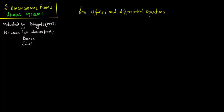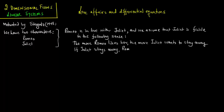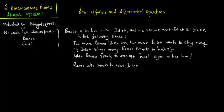One is Romeo and the other is Juliet. Romeo is in love with Juliet, and we assume that Juliet is fickle in the following sense: the more Romeo likes her, the more Juliet wants to stay away. If Juliet stays away, Romeo starts to back off. When Romeo starts to back off, Juliet begins to like him. Romeo also tends to echo Juliet, so he starts to like her when she likes him and becomes cold when she stays away.